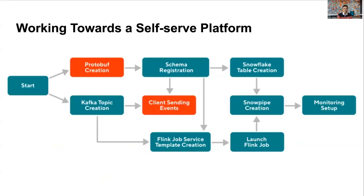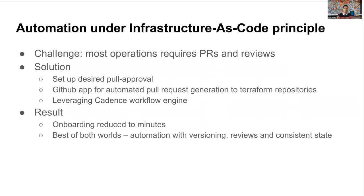We've covered end-to-end data flows from clients to data warehouse. Now let's discuss the operational aspect of Iguazu and how we're making it self-serve to reduce operational burdens. To achieve failure isolation, each event in Iguazu has its own pipeline from Flink job to Snowpipe. This requires a lot more setup work and makes operations a challenge. The onboarding of a new event involves complicated steps including creation of the Kafka topic, schema registration, creation of the Flink stream processing job, and creation of Snowflake objects. We really want to automate all these manual steps to improve operational efficiency.